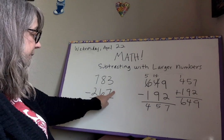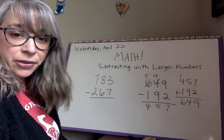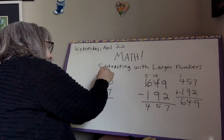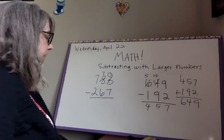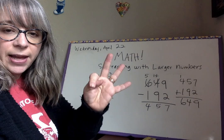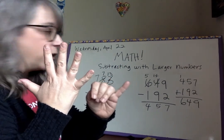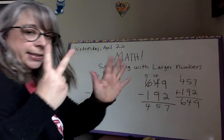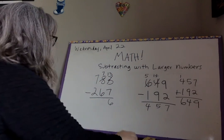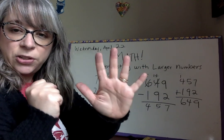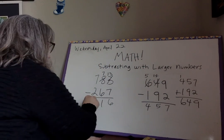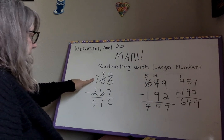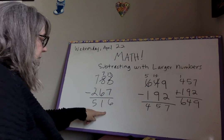Let's do another one. Right off the bat we're going to have to borrow because you can't take seven out of three. So we borrow from the tens. Now we can subtract: thirteen minus seven is six. Seven minus six is one. Seven minus two is five.